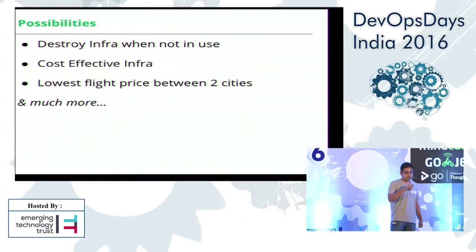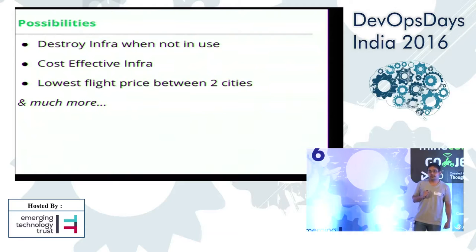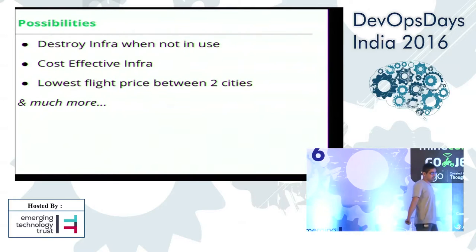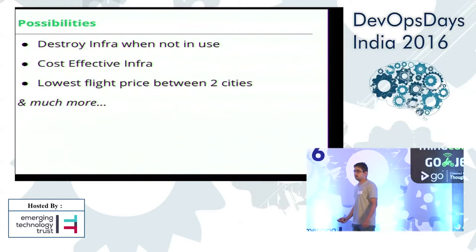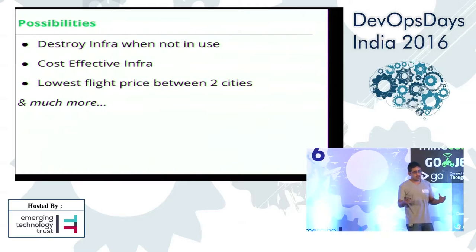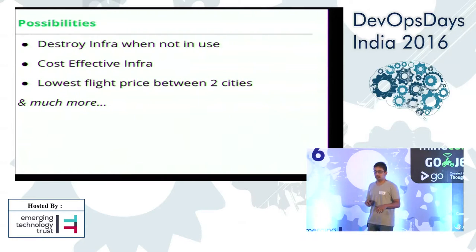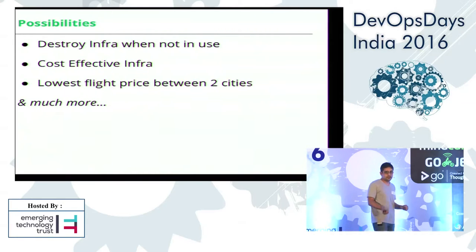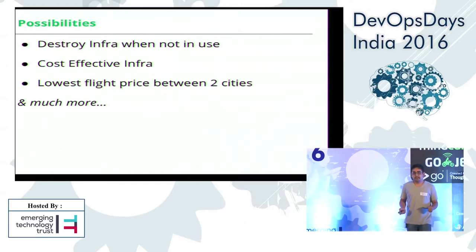Now let's talk about possibilities. We are all concerned about infrastructure costs. Samantha can destroy the infrastructure when you don't need it — you asked for infrastructure, you're not using it, it can destroy it and save your costs. That's how you can save money. A cost-effective infrastructure: if you say 'I want 10 services running on AWS with one MongoDB cluster of three nodes,' it will do all those things for you, and the scripts are written to save the cost and time.